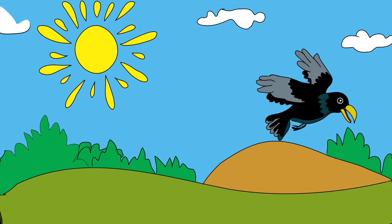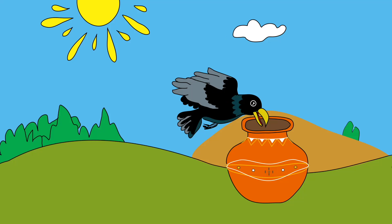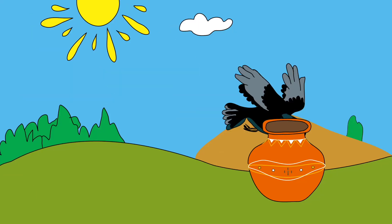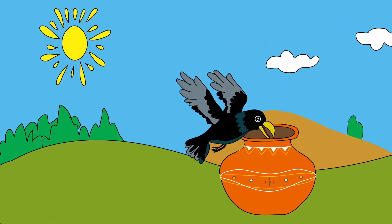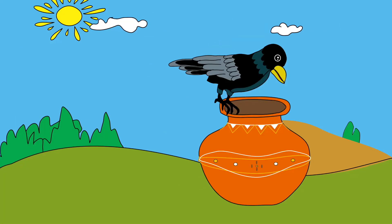As the crow flew on, he saw a pot lying on the ground. Maybe there's water in it, thought the crow hopefully. He flew down and looked inside. There was a little water at the bottom of the pot, but it was too low for the crow to reach.